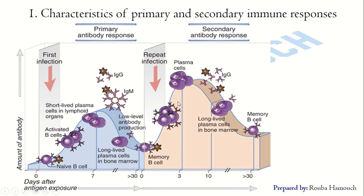Why? Because we have more B lymphocytes, more plasma cells, and thus more antibodies. The level of antibodies decreases but remains high compared to the level produced in the primary response. So the secondary immune response is the immunological memory.